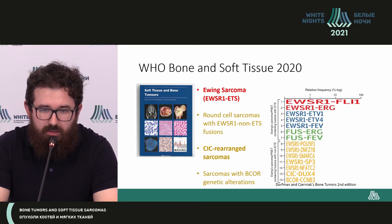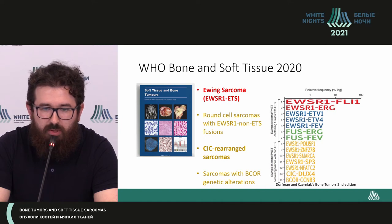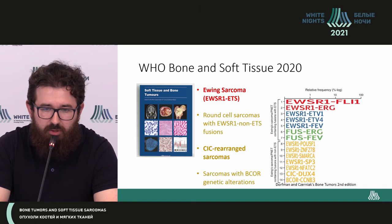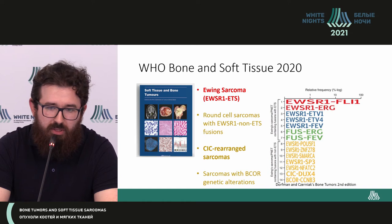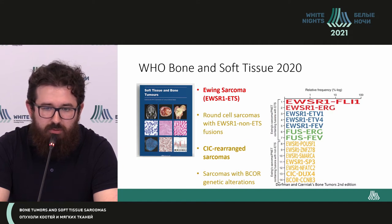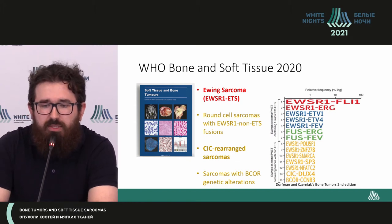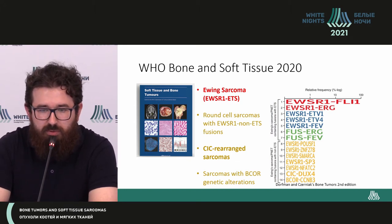There has been modification and updates in the current classification — it's a new blue book edited by WHO. Ewing sarcoma as well as round cell sarcomas are classified according to specific genetic rearrangements, which we can determine by means of sequencing, new generation sequencing.